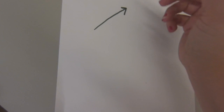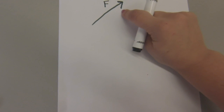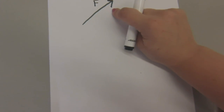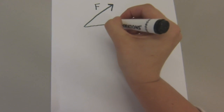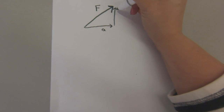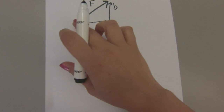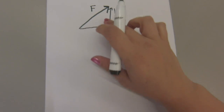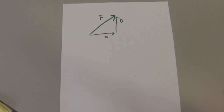For example, if I have this large force F represented as going up in this direction, it is the same as taking little forces A and B and adding them together. So basically, if you follow the same path, you'll follow the same path as force F.